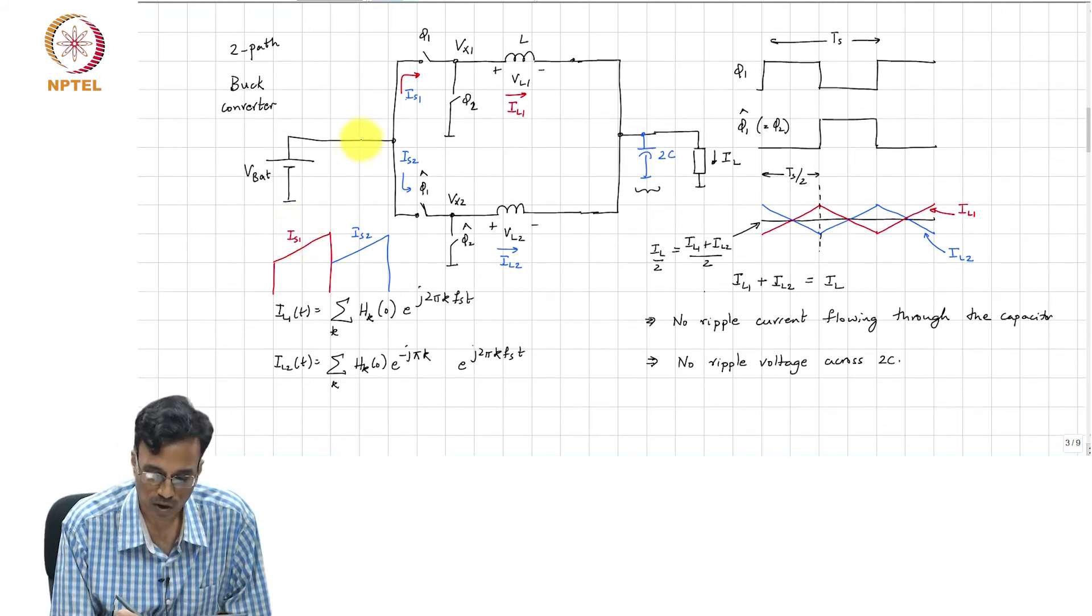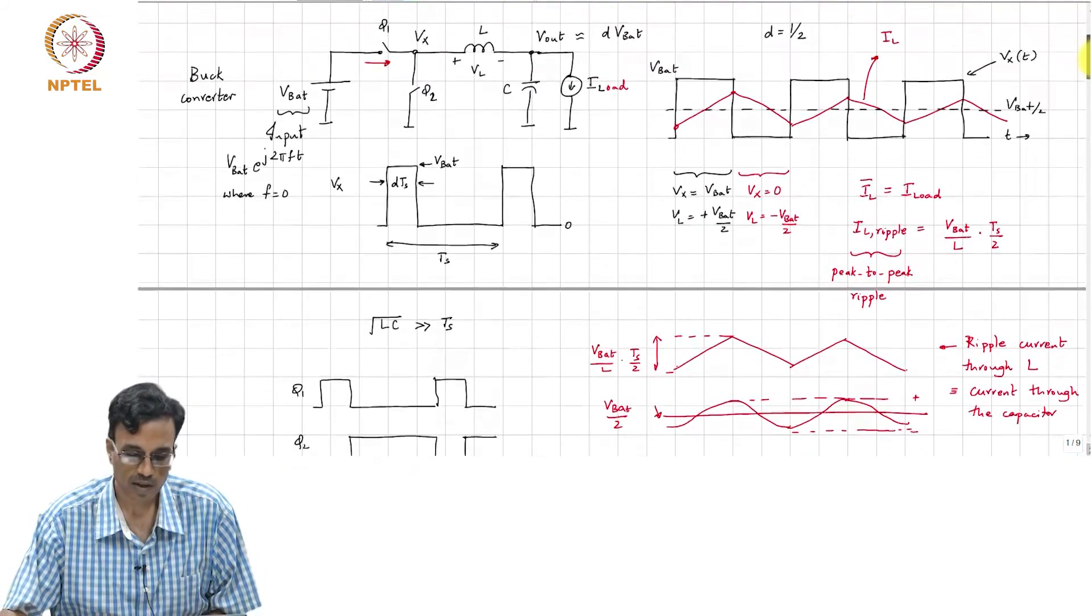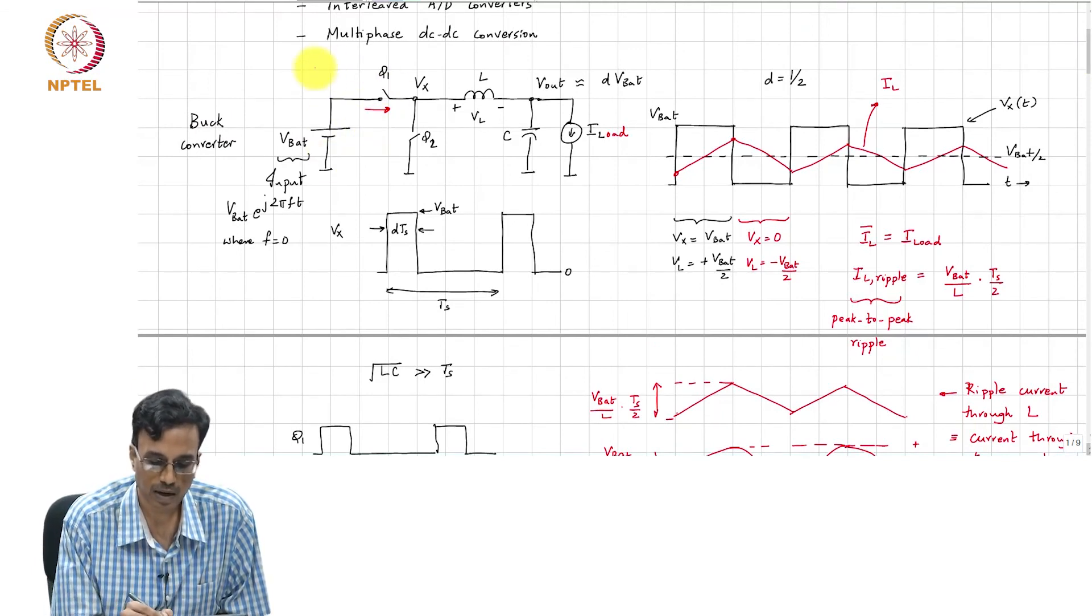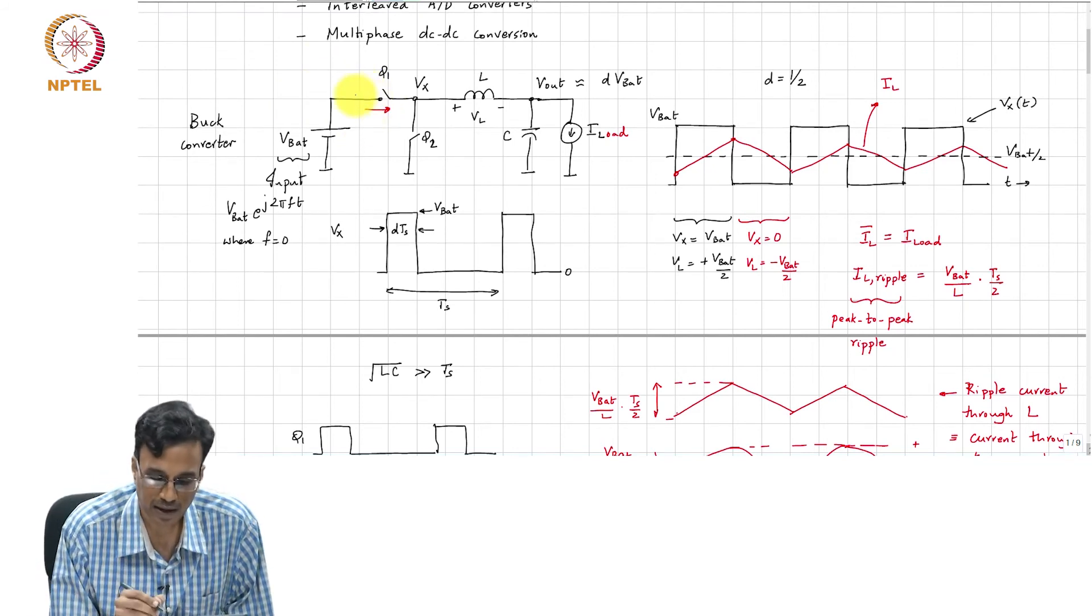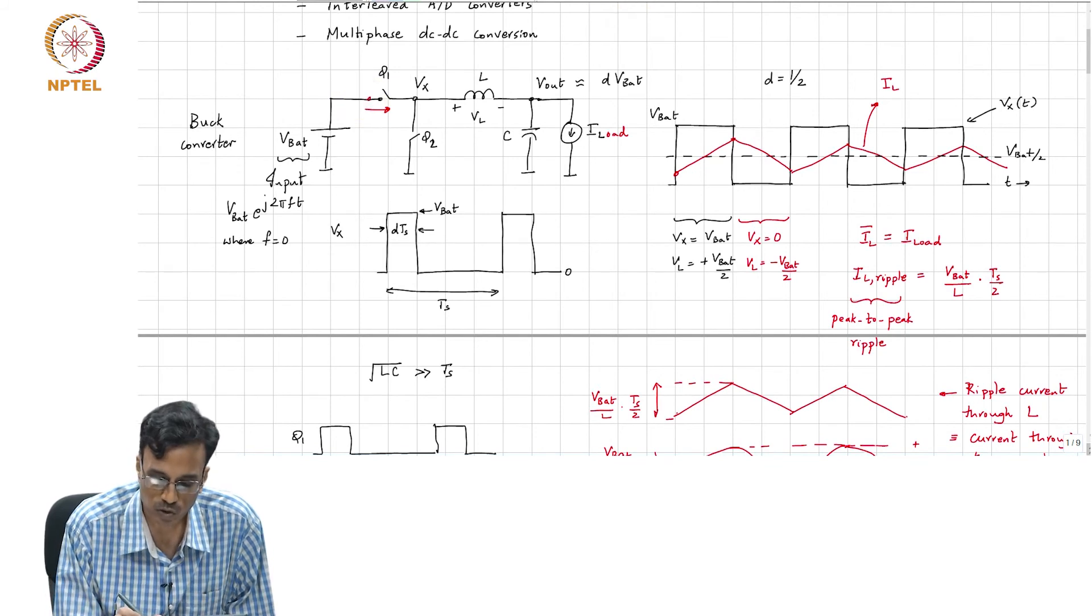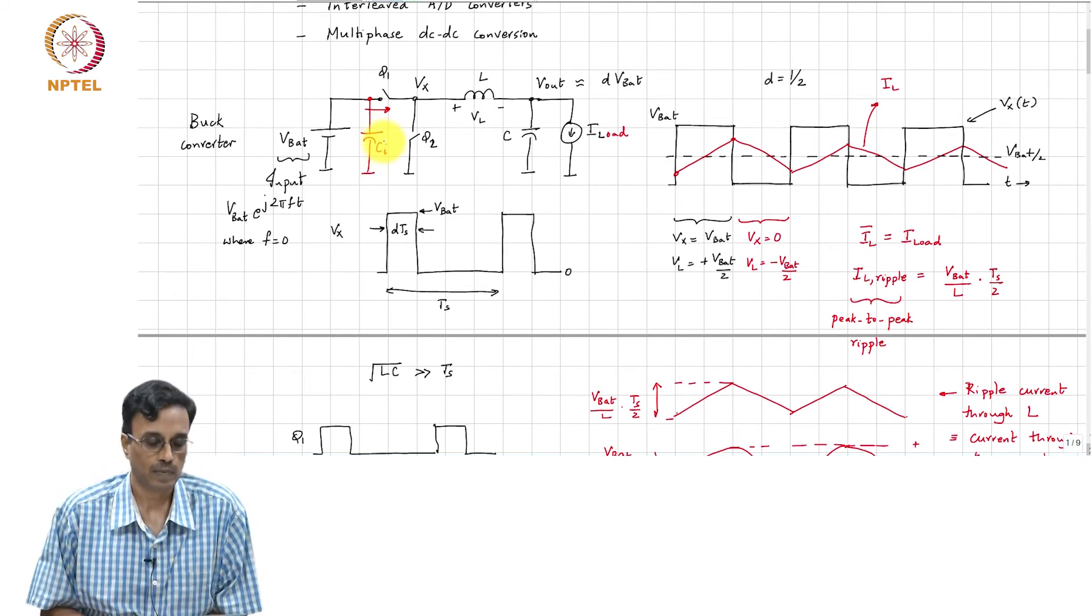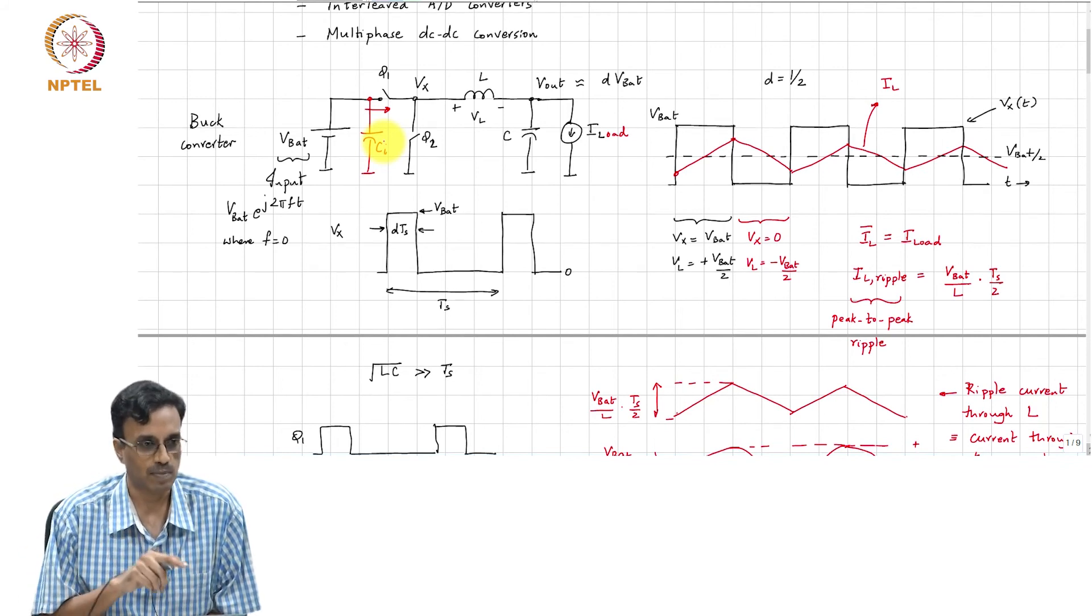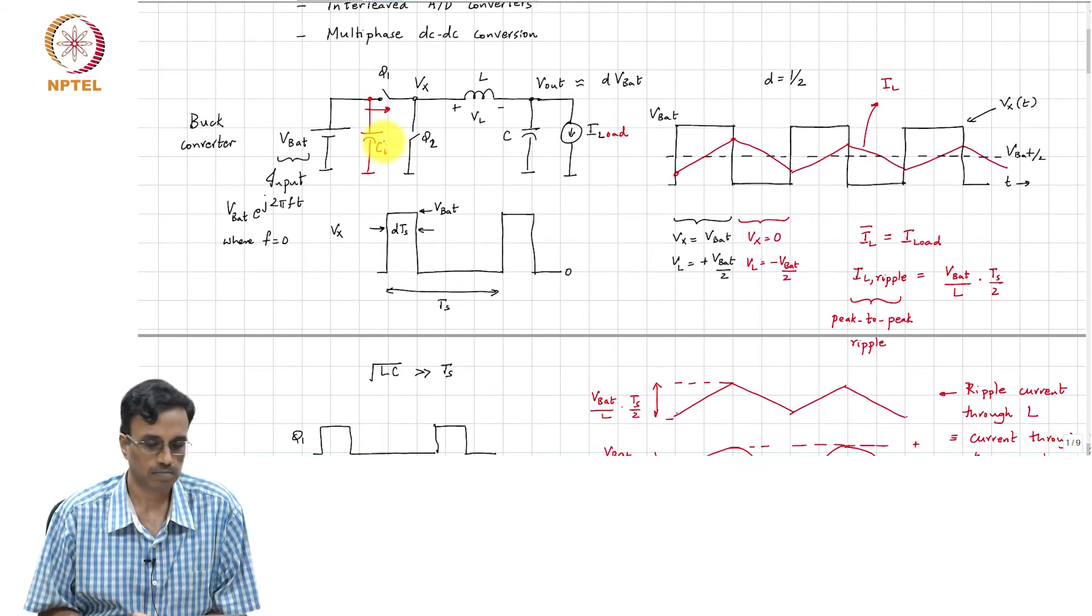You can see that in the single phase DC-DC converter, the current flowing through the battery would have huge spikes, and that damages the battery. So you would actually put in a big capacitor CI across the battery. All the high frequency current drawn by the switch is supplied by the capacitor and the battery only supplies largely a constant current.